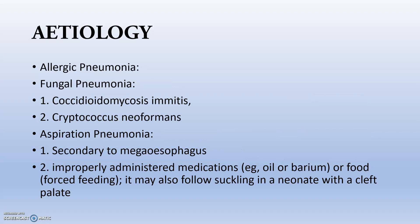Allergic pneumonia may occur if an animal is allergic to pollens, dust, or particles from plants. Fungal pneumonia is mainly caused by Coccidioides immitis and Cryptococcus neoformans. Aspiration pneumonia can also occur secondary to megaesophagus, improperly administered medicine such as oil or barium, forced feeding, or improper suckling with cleft palate problems. This leads to milk accumulation in the lungs and alveoli, causing hypoxemia, and the bacterial flora in the milk attacks the endothelial cells of the alveoli, producing severe bronchopneumonia.